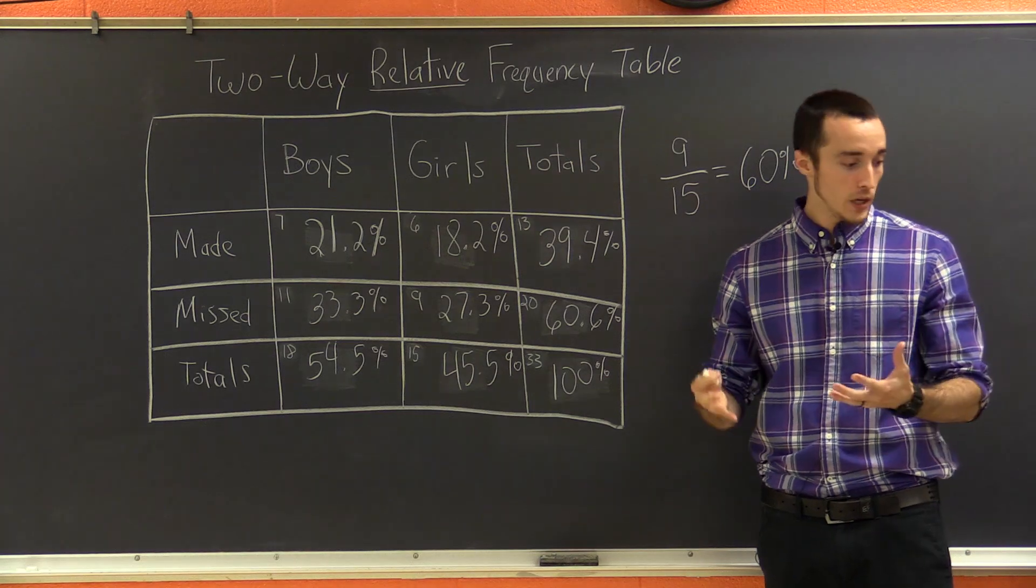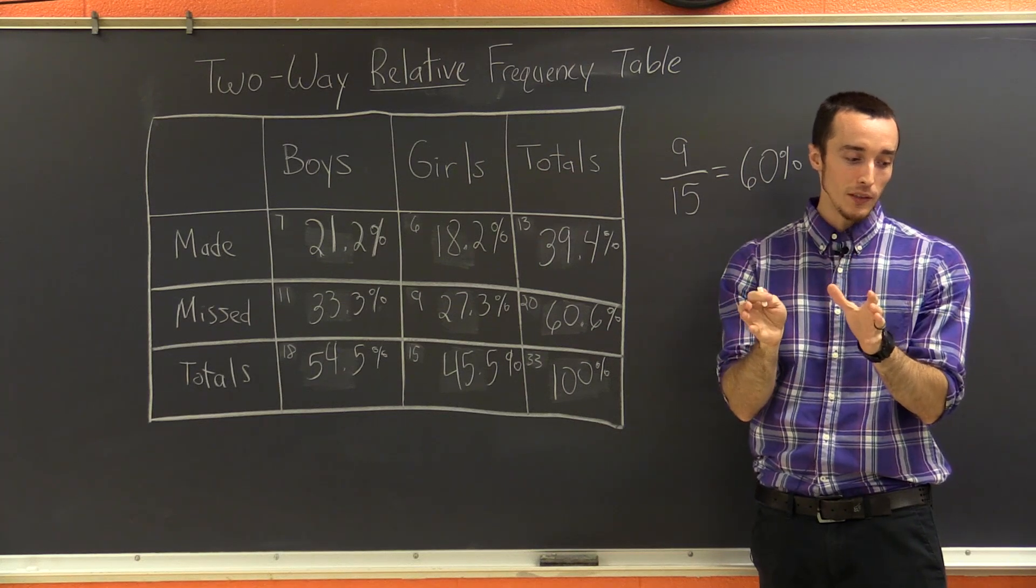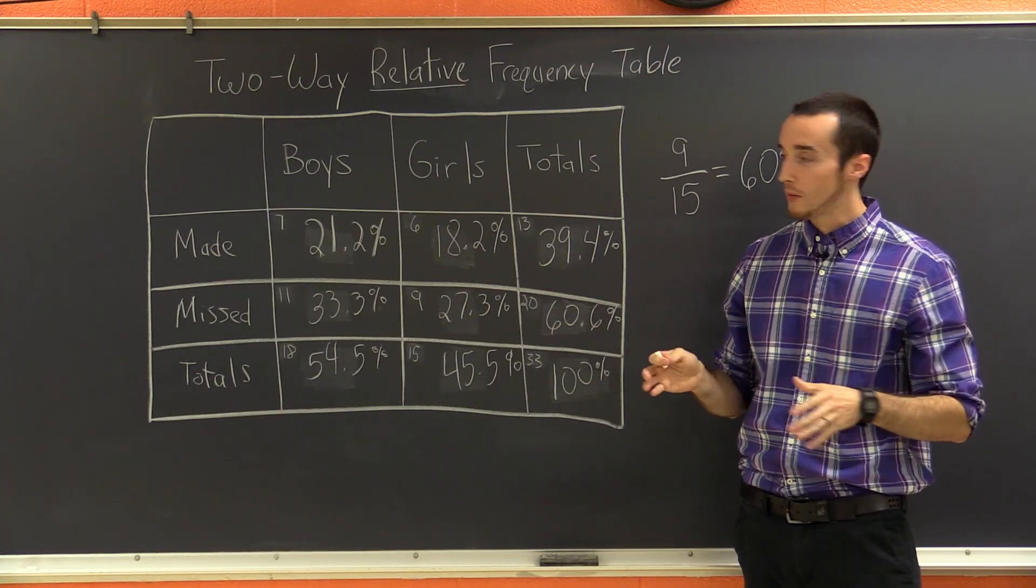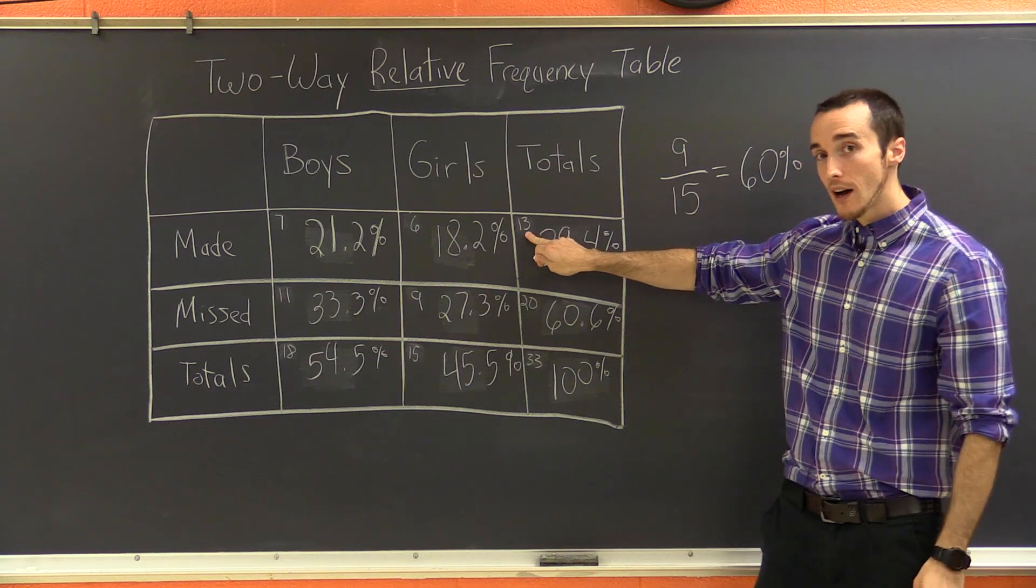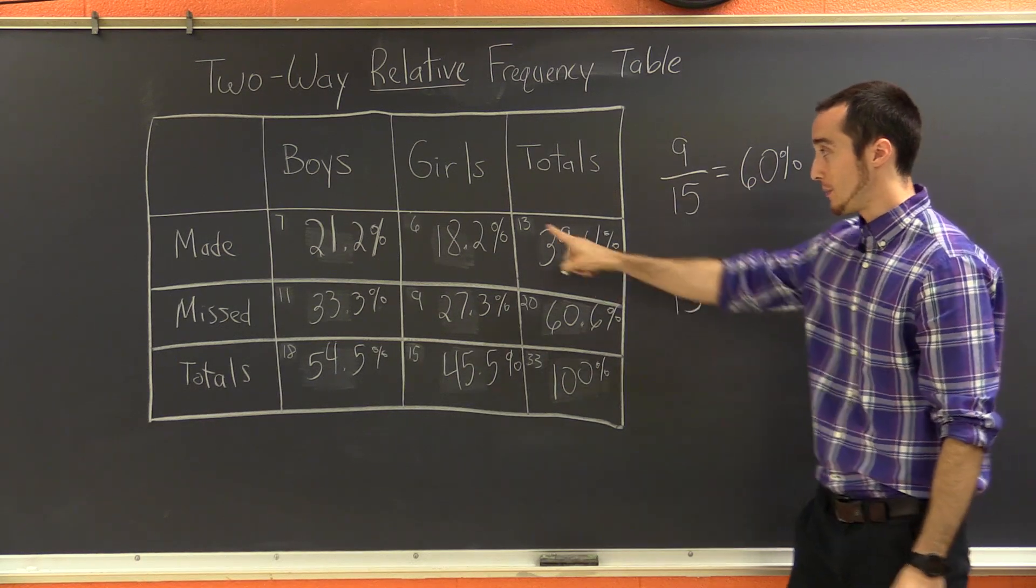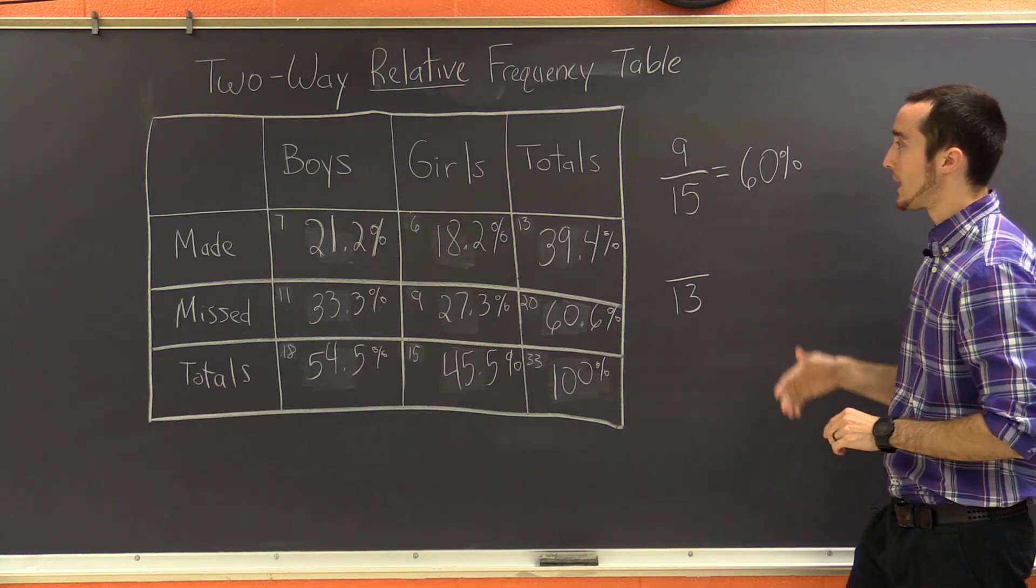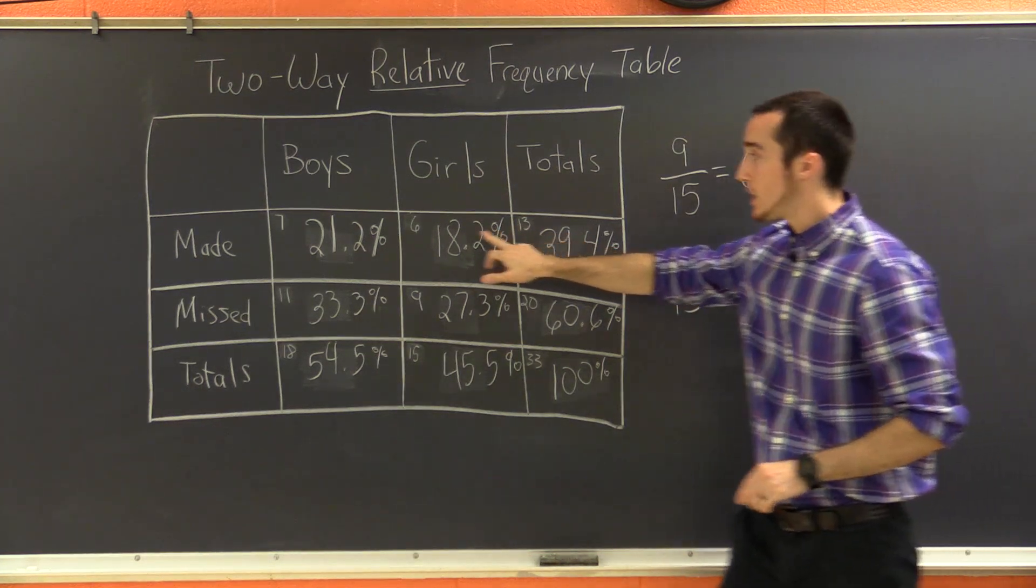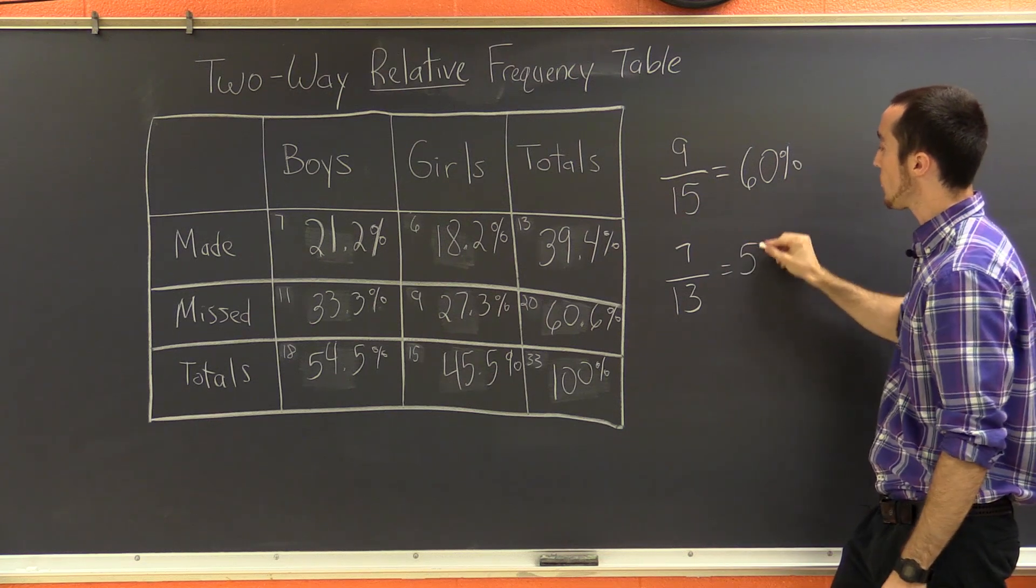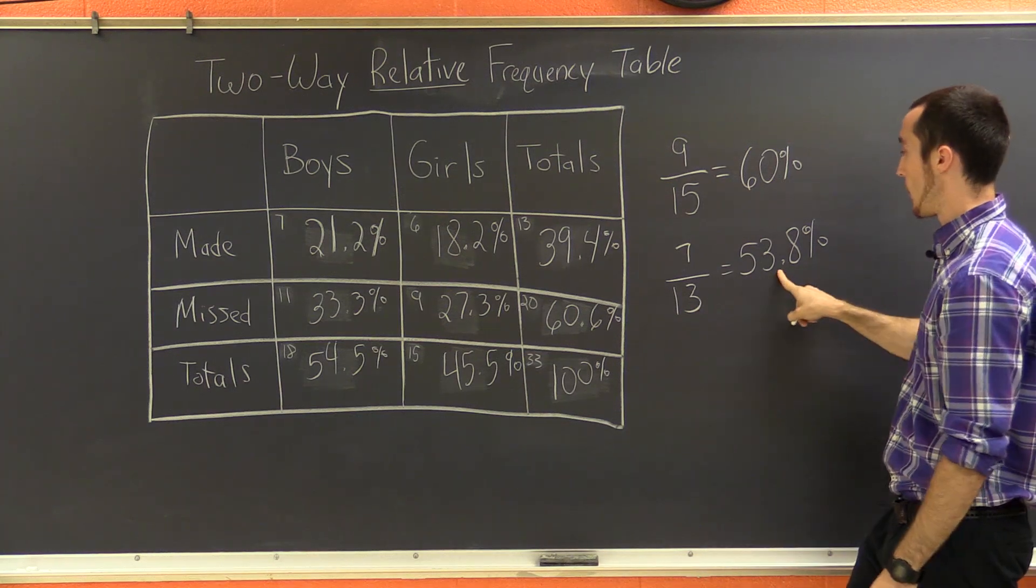So 60%. Let's try one more. What is the conditional relative frequency? Or here's how I phrased it. Given that they made a basket, what is the conditional probability that the person is a boy? Given that they made a basket, I'm only talking about 13 people. There were only 13 people that made a basket. So it's some number out of 13, because I'm given this, so that's the denominator. What is the conditional probability that the person is a boy? How many of these 13 people are boys? It's 7. So 7 out of 13, as a percent, is going to be 53.8%. And again, all we did there was take 7 divided by 13, multiply it by 100, and got 53.8.